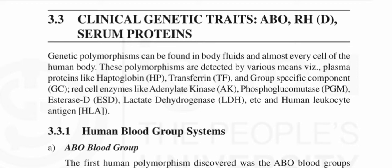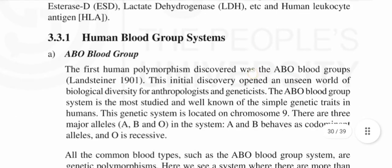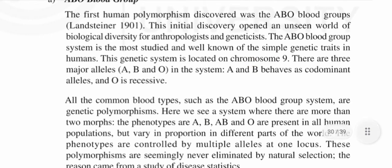Other markers include lactate dehydrogenase, and the human leukocyte antigen system. The first human polymorphism discovered was the ABO blood groups. This initial discovery opened an unseen world of biological diversity for anthropologists and geneticists. The ABO blood group system is the most studied and well-known of the simple genetic traits in humans.